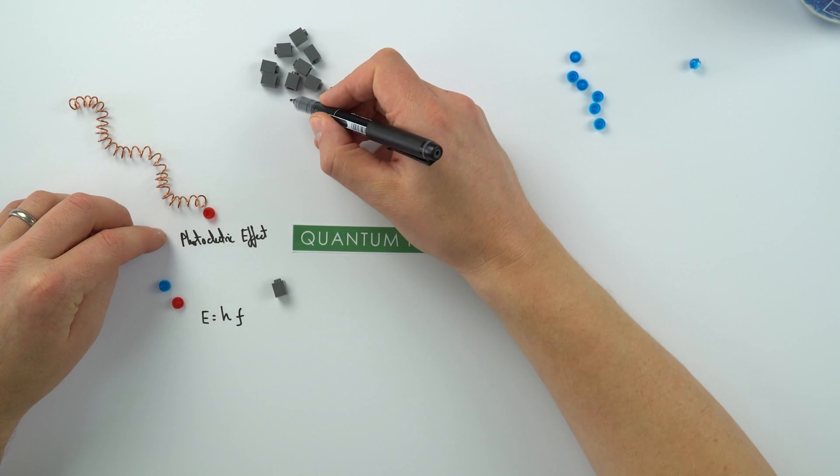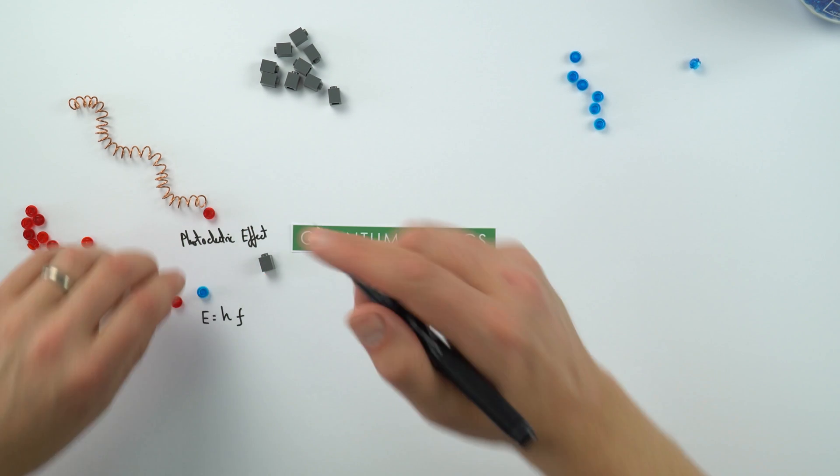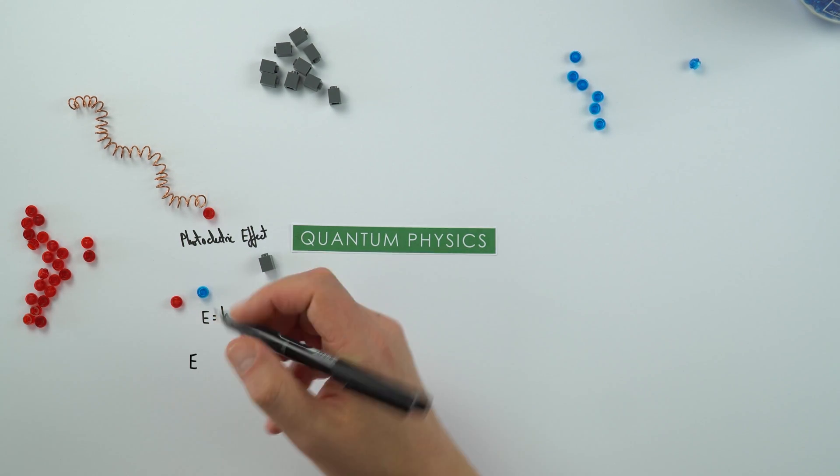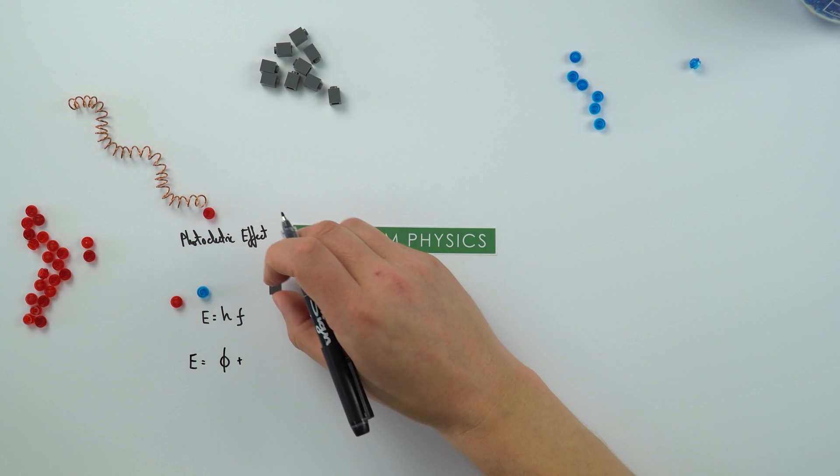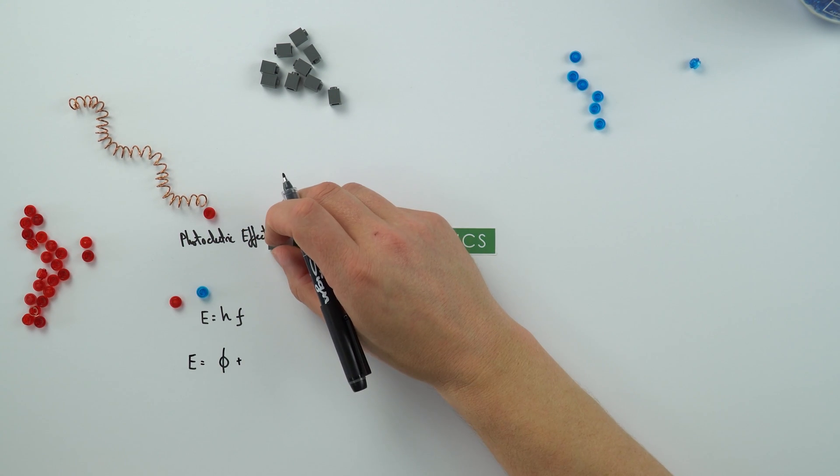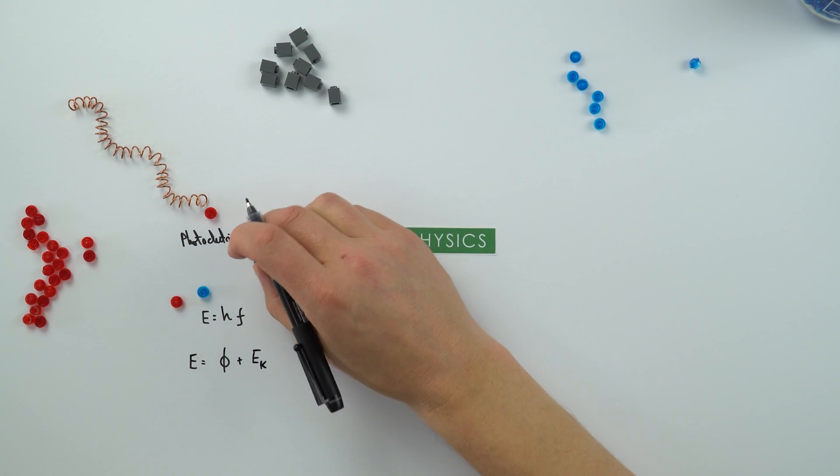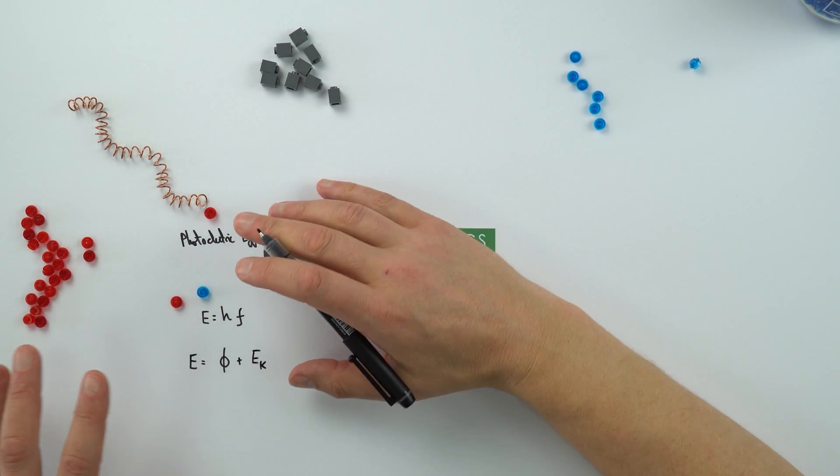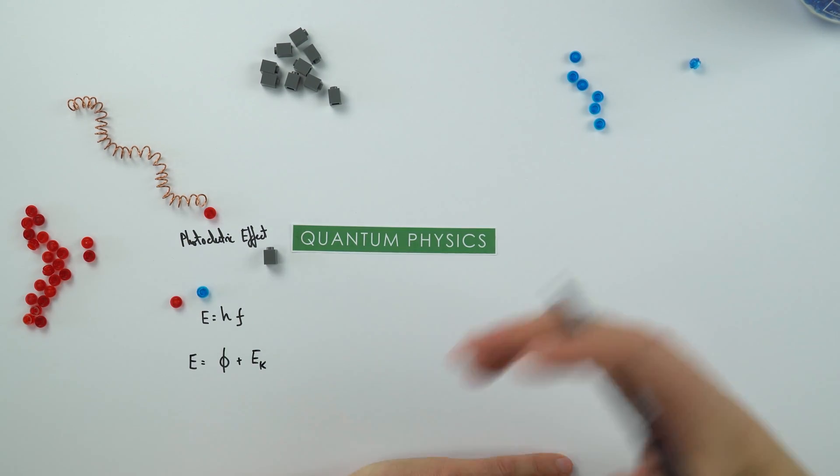Where effectively one photon interacts with one electron. In actual fact, the energy of that photon has to overcome something called the work function of that material. So that's as the electron maybe leaves the surface, and then any extra energy it has is then the kinetic energy of that photoelectron as it moves away. But that will all be explained as you go into A-level.